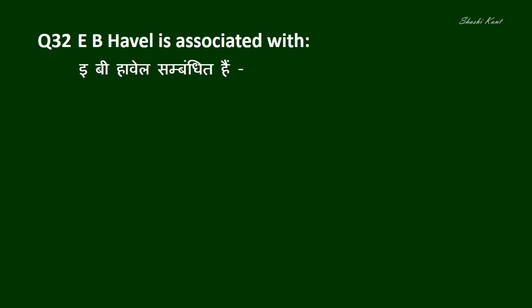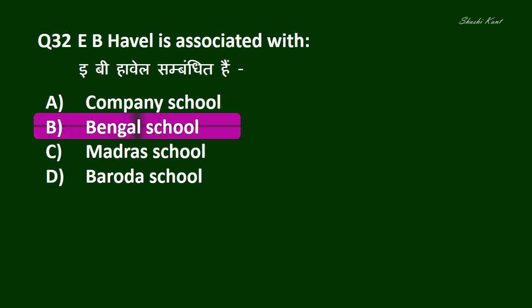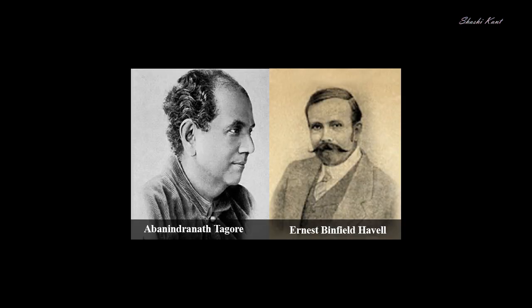Question No. 32: E.B. Havel is associated with — E.B. Havel संबंधित है। A. Company School, B. Bengal School, C. Madras School, D. Baroda School. And the correct answer is B. Bengal School. He was the principal of the Government School of Art, Calcutta, from 1896 to 1905, where along with Abhinandranath Tagore, he developed a style of art and art education based on Indian rather than Western models, which led to the foundation of the Bengal School of Art.